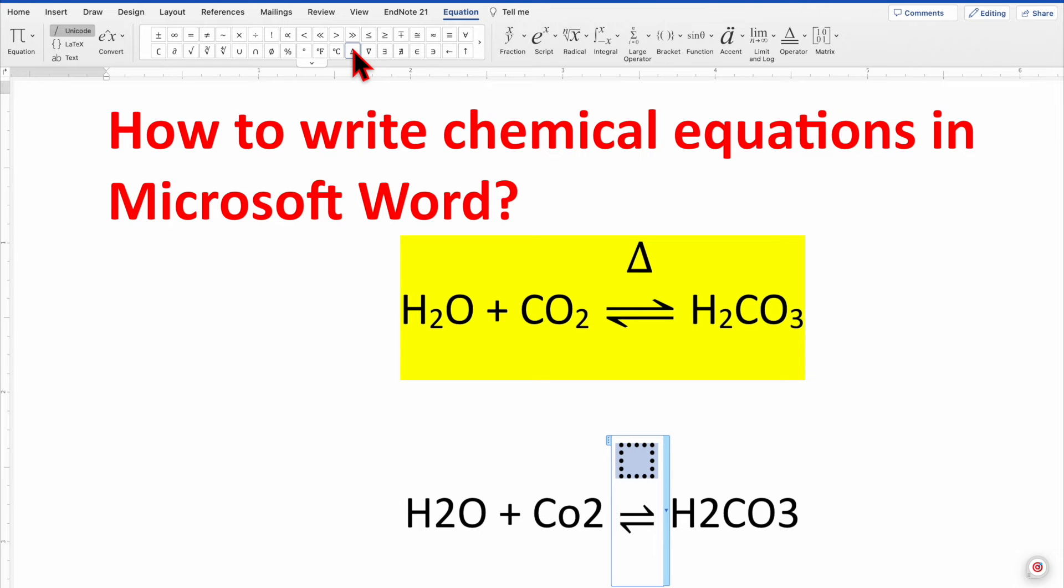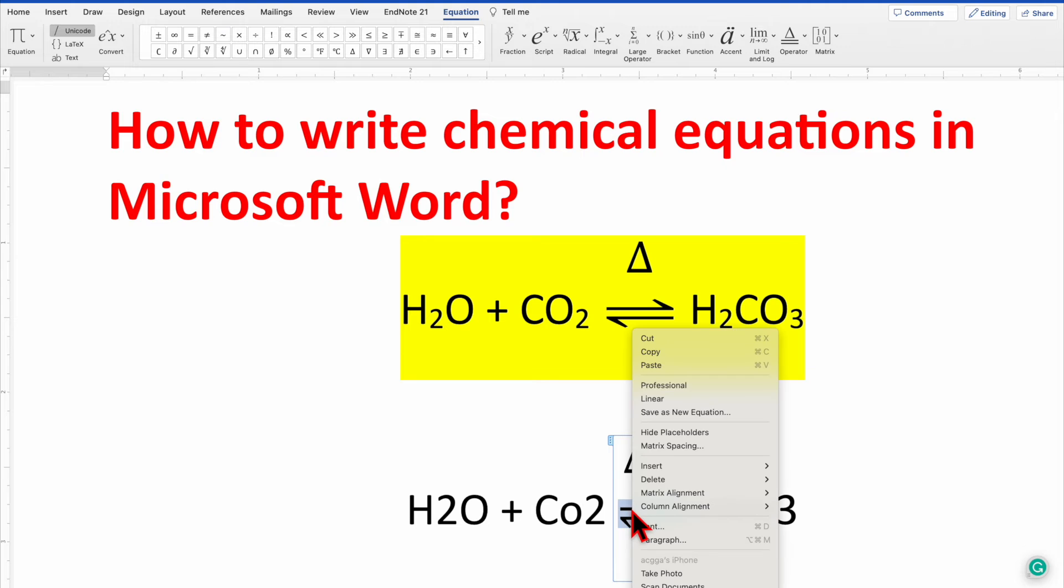the increment sign. Click on this one. The arrow size over here is much smaller than what we see in this equation. So how to increase the arrow size? Select it, right click. After right clicking you will find an option for the font. The shortcut is Command D. Click on this one and